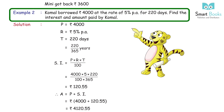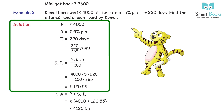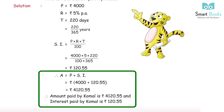Example 2: Kamal borrowed Rs 4,000 at the rate of 5% PA for 220 days. Find the interest and amount paid by Kamal. Solution: P = Rs 4,000, R = 5% PA, T = 220 days = 220/365 years. SI = 4,000 × 5 × 220 ÷ (100 × 365) = Rs 120.55. Amount = Rs 4,000 + Rs 120.55 = Rs 4,120.55. Amount paid by Kamal is Rs 4,120.55 and interest paid is Rs 120.55.